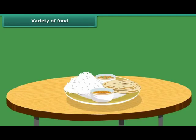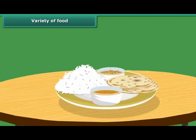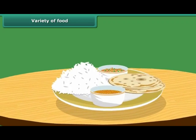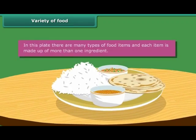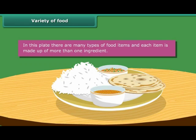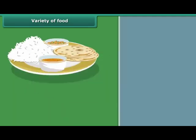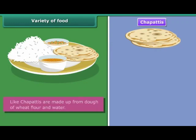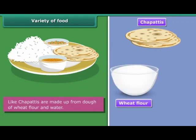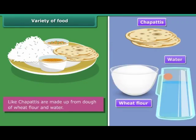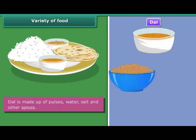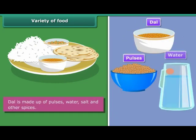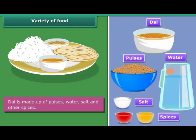Variety of food. Hey, look at the food. What did you notice? In this plate, there are many types of food items and each item is made up of more than one ingredient. Like chapatis are made up from dough of wheat flour and water. Similarly, dal is made up of pulses, water, salt and other spices.